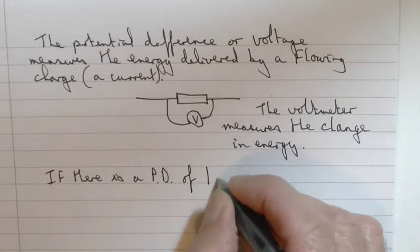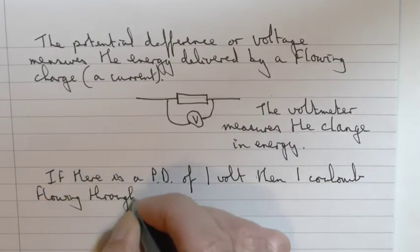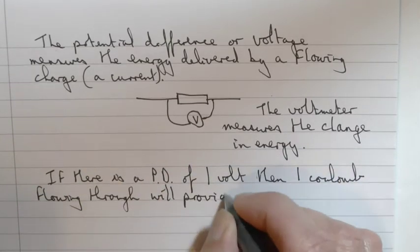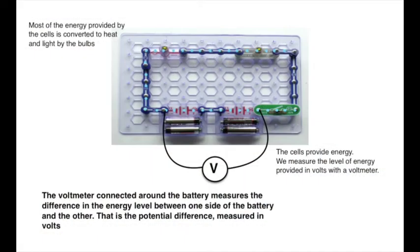If there is a voltage, a potential difference of one volt, then one coulomb flowing through will provide one joule of energy. The voltmeter around the cells measures the amount of energy provided to the current flowing through, to the charge flowing through.